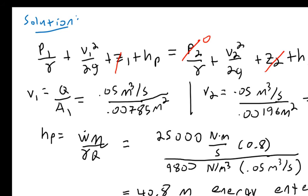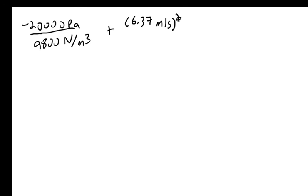Alright, so from here, it's just plugging and chugging. I'm going to write out the energy equation again. Negative 20,000 pascals, divided by 9,800 newtons per cubic meter. Plus our velocity 1 term, 6.37 meters per second, quantity squared, divided by 2 times 9.81 meters per second squared. And then plus our pump head of 40.8 meters.